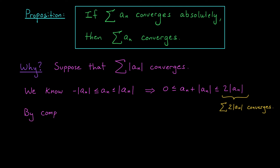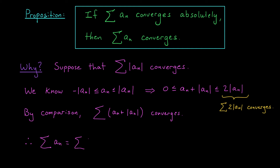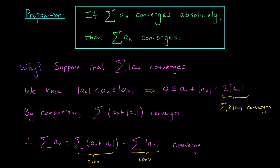By comparison, the sum of a_n plus the absolute value of a_n must converge. The last step is to note that the series we're actually interested in — the sum of the a_n's — is simply this series minus this series. Since both of these series are convergent, their difference will be convergent as well. The sum of the a_n's equals the sum of (a_n plus the absolute value of a_n) minus the sum of the absolute value of a_n. Since both of these series are convergent, we conclude that the sum of the a_n's is convergent. Therefore, any series that converges absolutely must also converge.